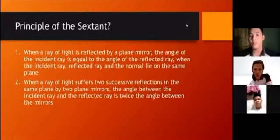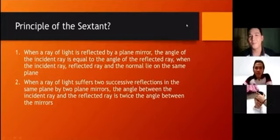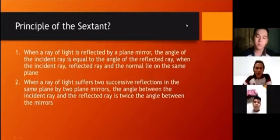Let's go to the principle of the sextant. When a ray of light is reflected by a plane mirror, the angle of the incident ray is equal to the angle of the reflected ray, when the incident ray, reflected ray and the normal lie on the same plane. The second principle: when a ray of light suffers two successive reflections in the same plane by two plane mirrors, the angle between the incident ray and the reflected ray is twice the angle between the mirrors.